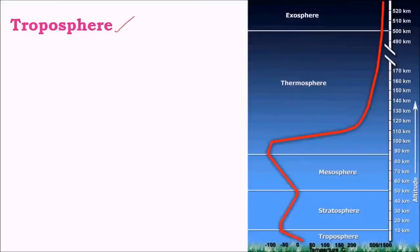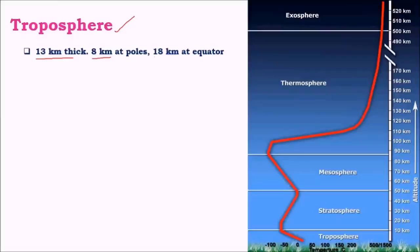The first important layer is troposphere, the bottommost layer. It extends on average about 13 km above earth's surface — about 8 km at the poles and about 17 to 18 km at the equator. This difference is mainly due to differential heat received by various latitudes. At the equator, heated air increases in volume and rises, increasing troposphere thickness, whereas at the poles the cold air condenses and does not rise, resulting in a thickness of only about 8 to 9 km.